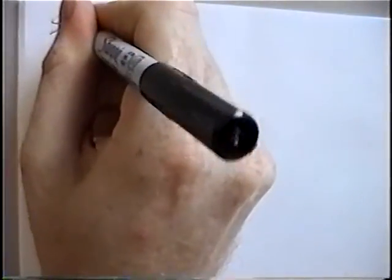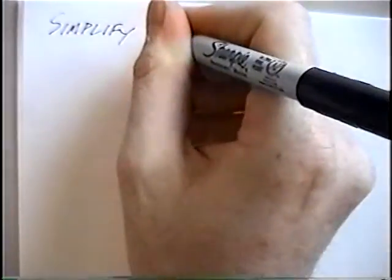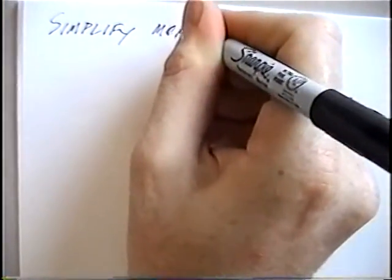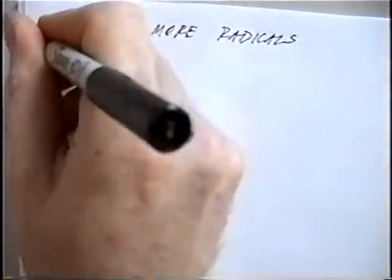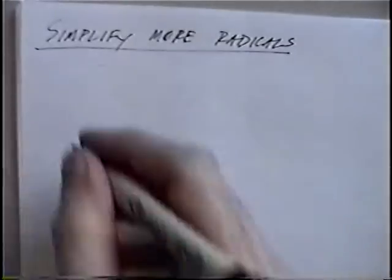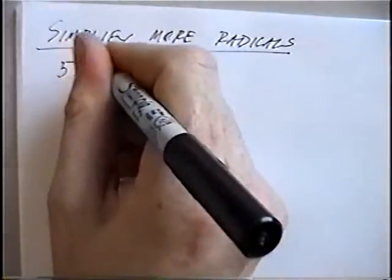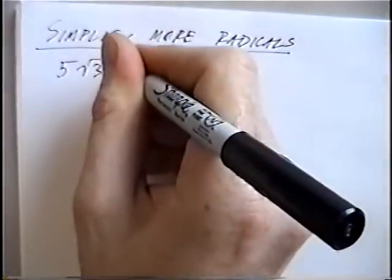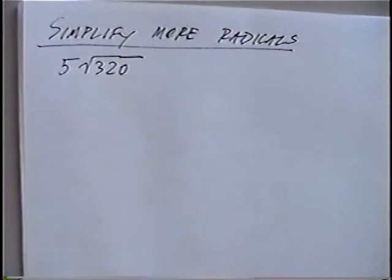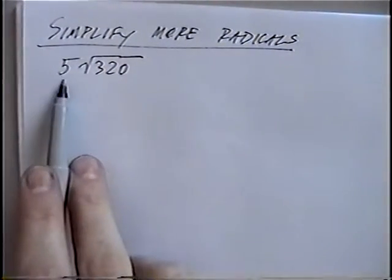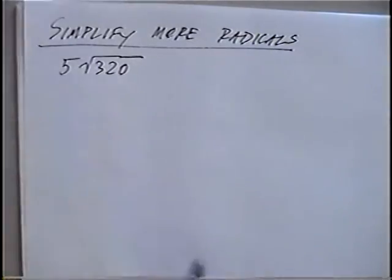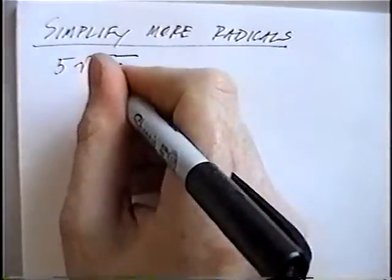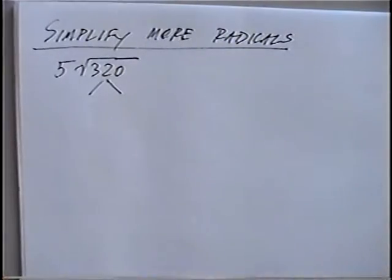The last section of notes today is titled Simplify More Radicals. The first question for this section is 5 radical 320. For this problem we have an extra 5 outside the radical sign, which means we'll multiply our final answer by 5. The 320 inside the radical we can do a factor tree for.